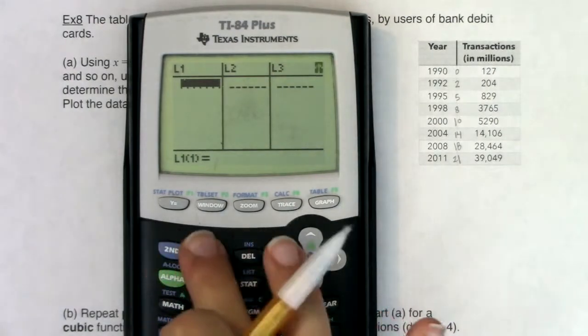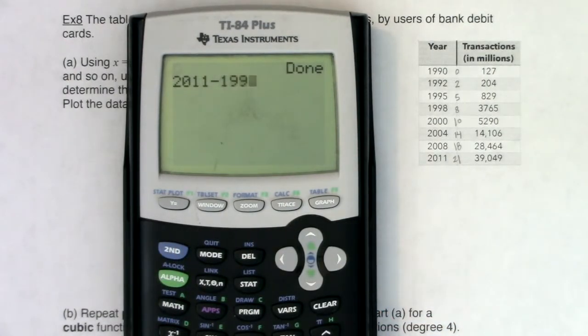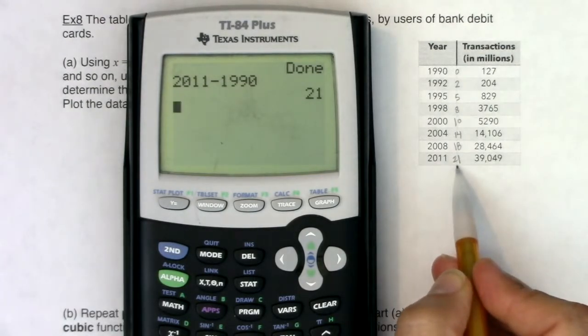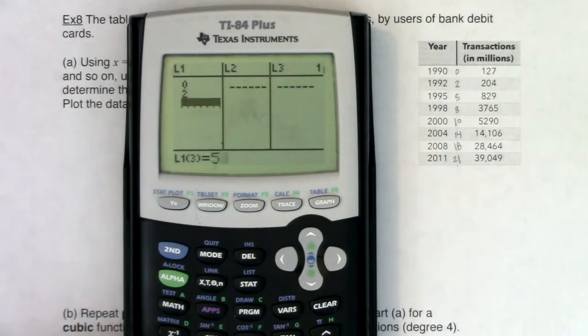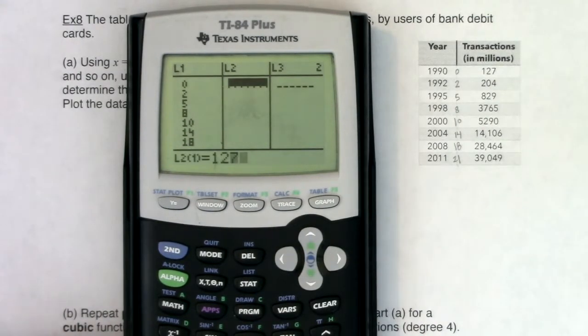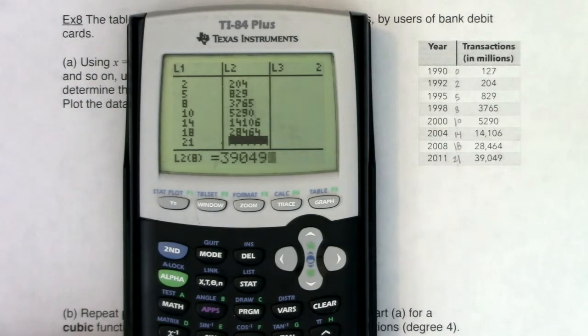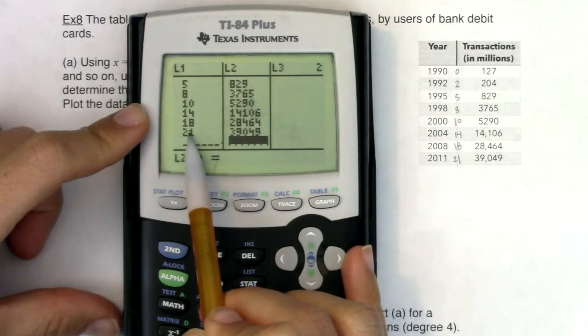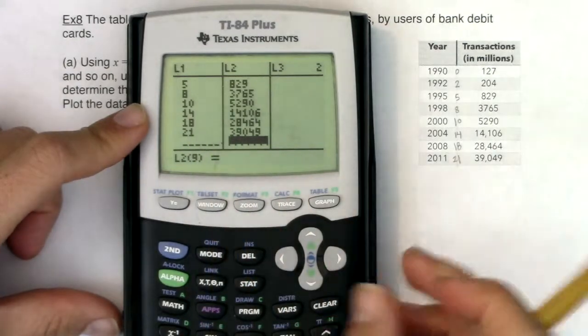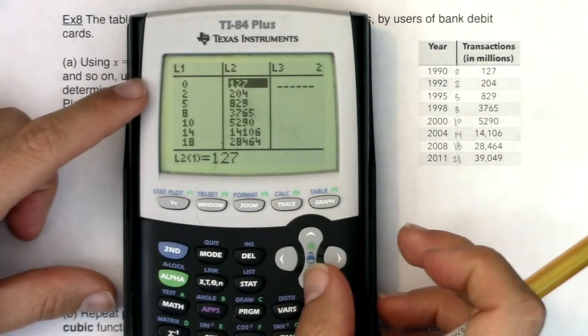If you're ever unsure, you can always take your current year and subtract out your base year and find out what your time value, your x value, your independent or input value would be. Let's go get these in my lists.